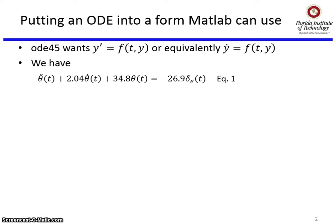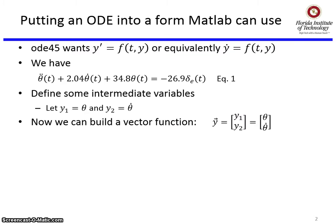We have a second-order differential equation, but we can make a vector function that involves θ̇ and θ. We'll define some intermediate variables: let y₁ = θ and y₂ = θ̇. We can then build this vector function ȳ = [y₁, y₂] = [θ, θ̇].